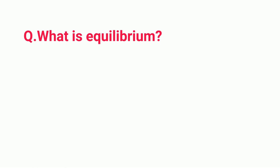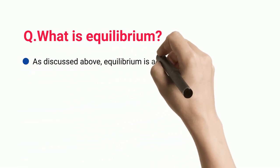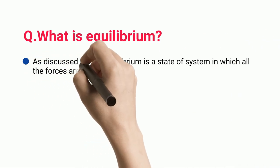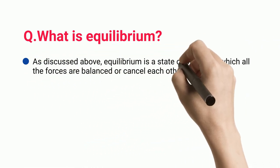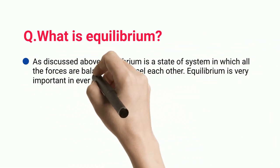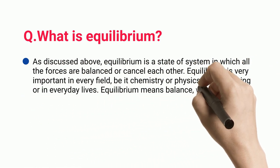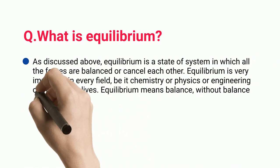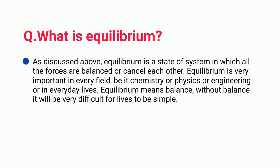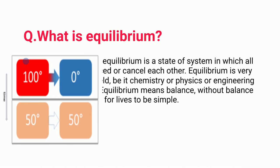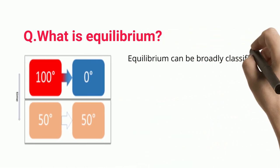Equilibrium is a state of a system in which all the forces are balanced or cancel each other. Equilibrium is very important in every field, be it chemistry, physics, engineering, or in everyday lives. Equilibrium means balance; without balance, it will be very difficult for lives to be simple.